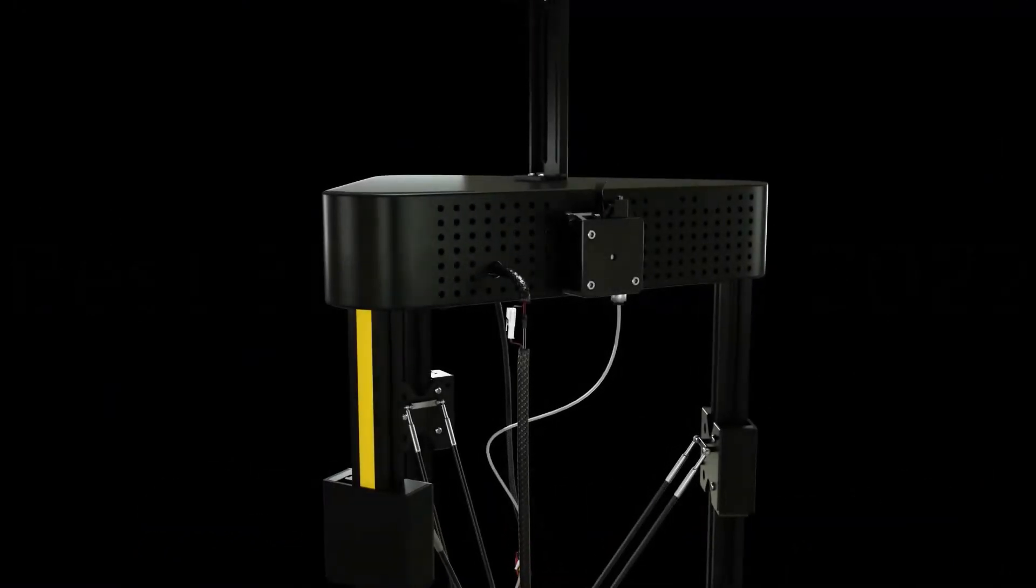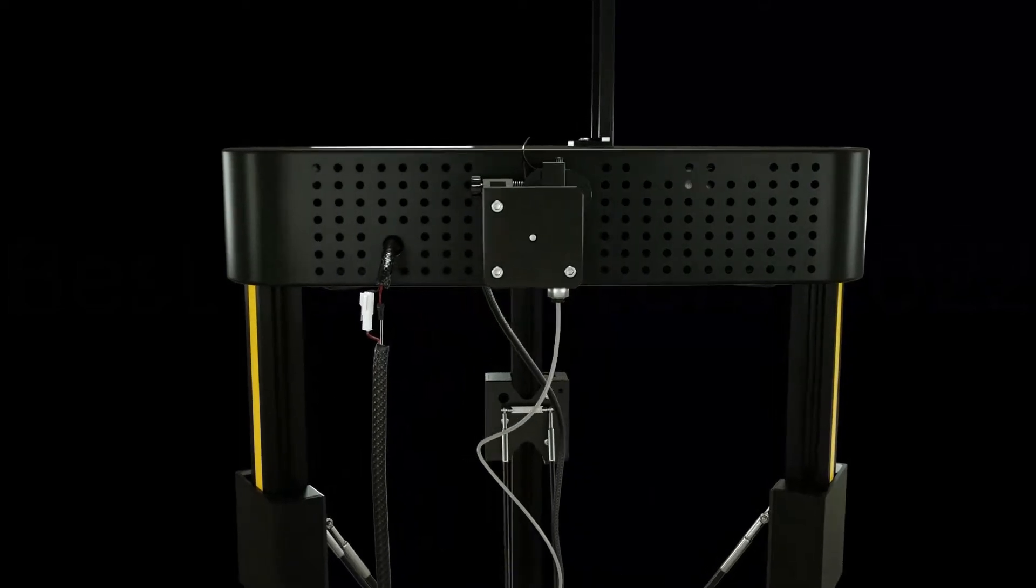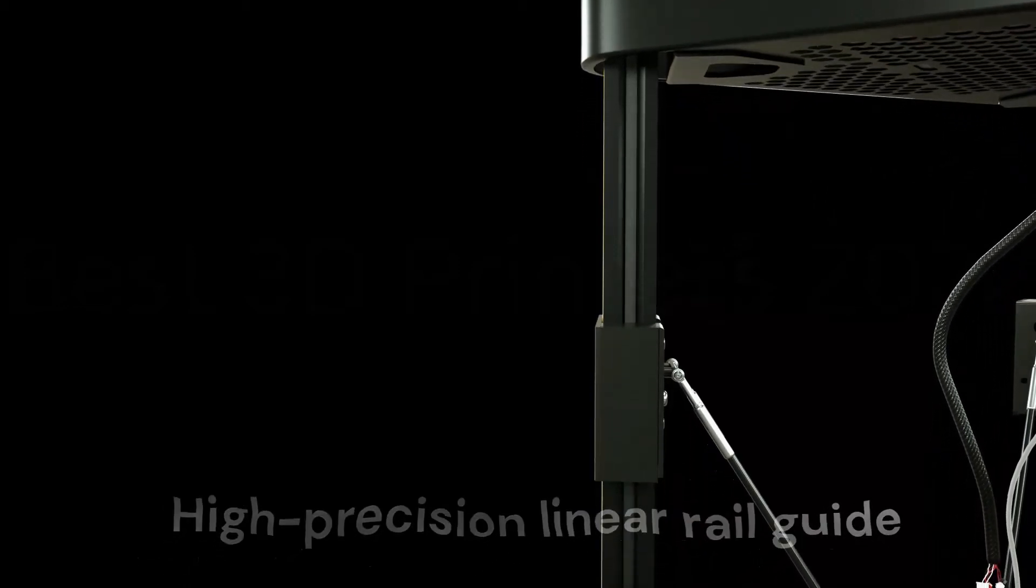260x330mm large printing size, large printing volume 10.2 inch diameter x13h / 260x260x330mm. Linear rail guide, high-precision linear rail guide, providing higher printing accuracy and stability, and lower noise.